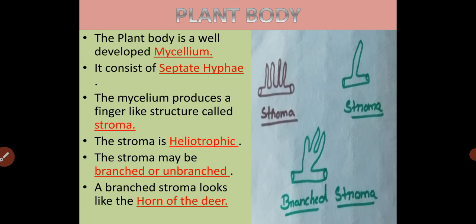The plant body of Xylaria is mycelium which is septate hyphae in condition. The mycelium produces the finger-like structure called as the stroma. These stroma usually grow towards the light, hence exhibiting heliotropic condition. The stroma may be branched or unbranched; the branched stroma appears like the horn of a deer.